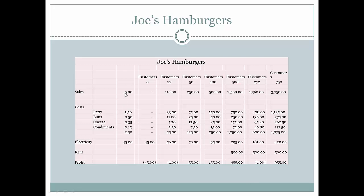As Joe goes through several months of business, he's going to understand that every time he sells a hamburger, $2.50 is automatically gone. That means every time he sells one, he only has $2.50 left over, because he had to spend that money to make that money — only $2.50 is left over every time he sells one to use to pay all his other costs.